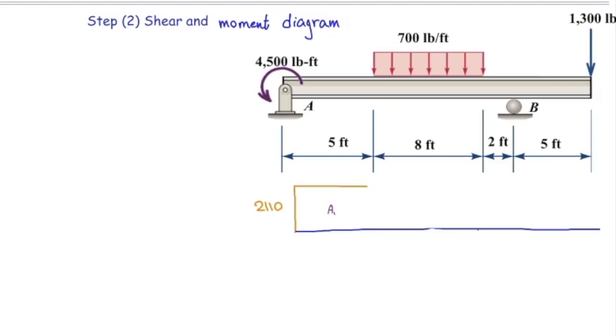But once we reach to that distributed load, there will be linear change in the shear value. The amount of change depends on the magnitude of that distributed load. So, slope of the line would be 700 pound-feet, or the given value.